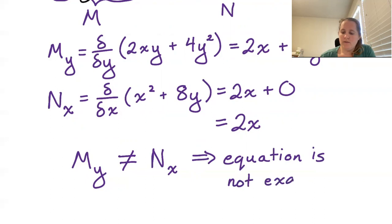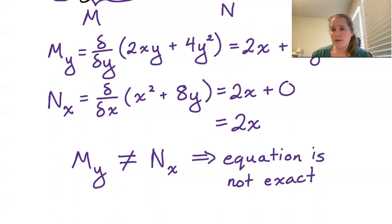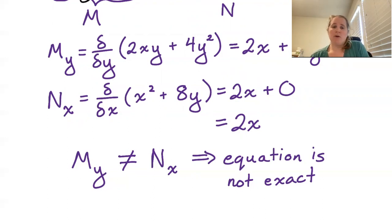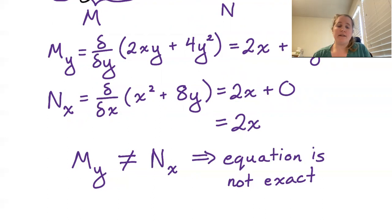This is a very quick way to determine if your equation came from a multivariable product rule. If it doesn't, we have work to do. If it did come from the multivariable product rule, then it's a pretty quick trick to solve the problem. We'll be seeing that in the next video.